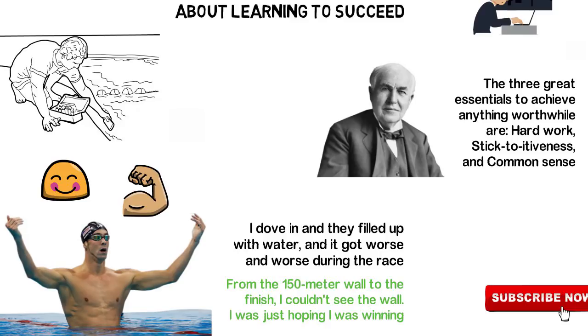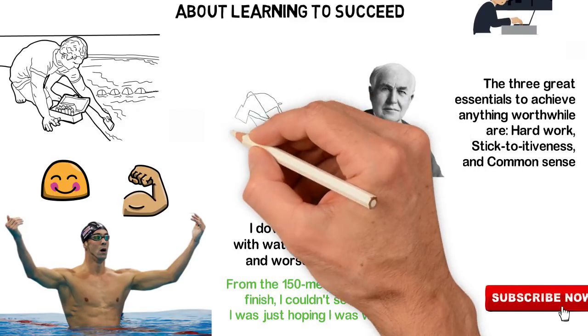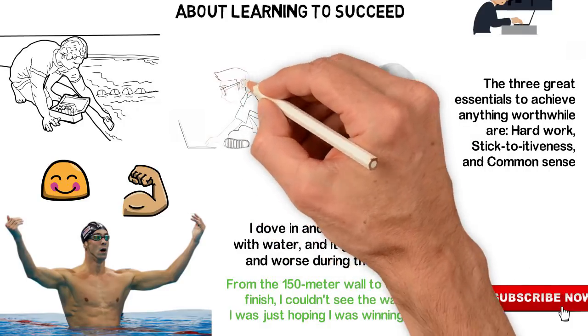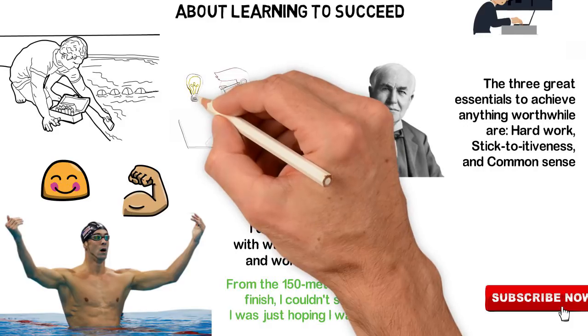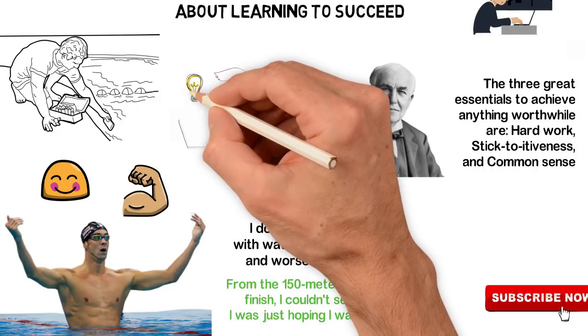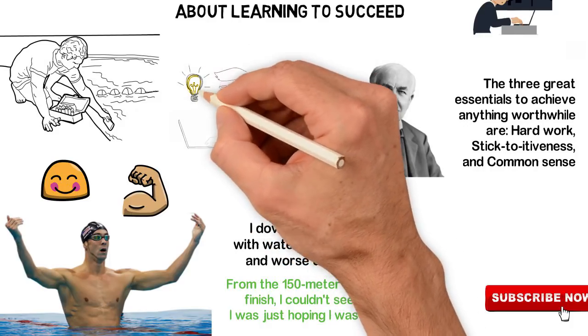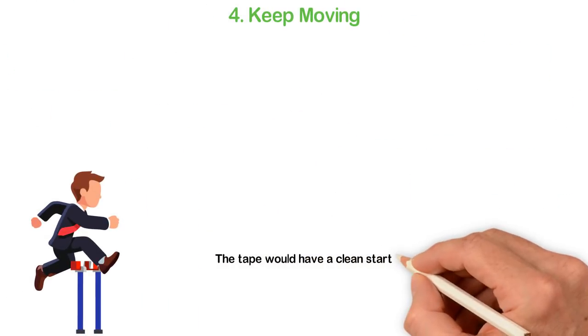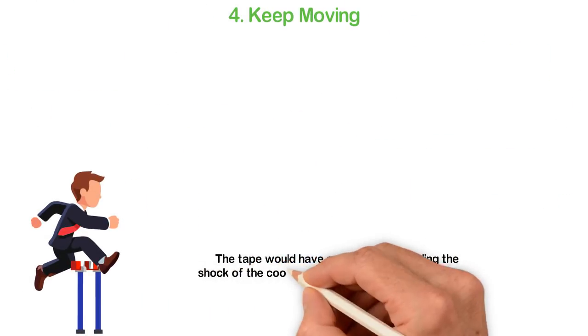How did Phelps win the competition even though his goggles were flooded? You see, Phelps' coach Bob Bowman taught him to play the tape of the perfect race in his head twice a day. So Phelps played the tape when he woke up and then just before going to sleep.